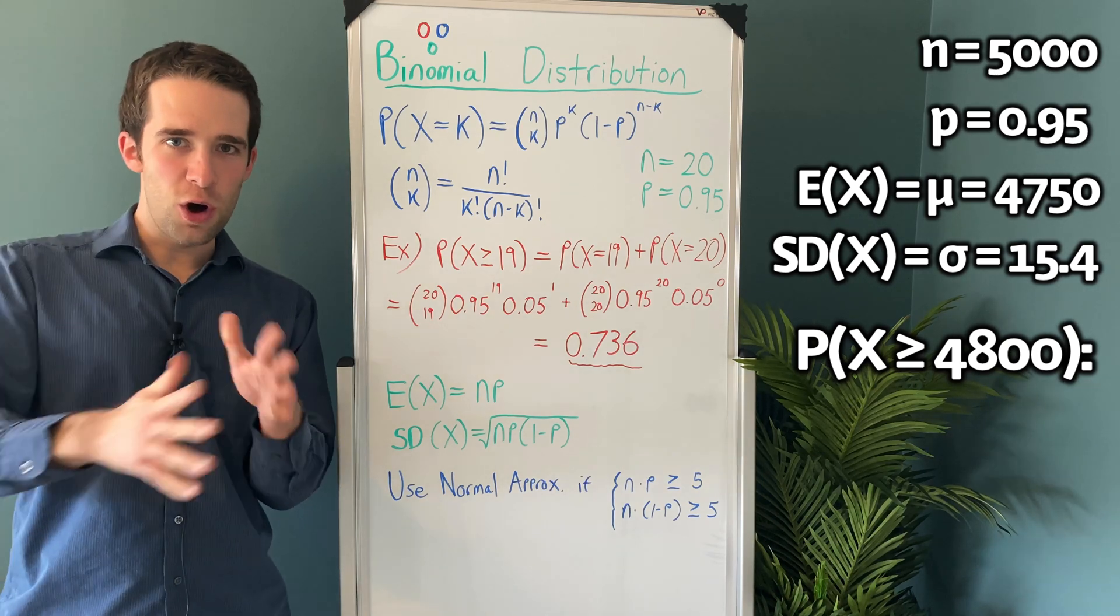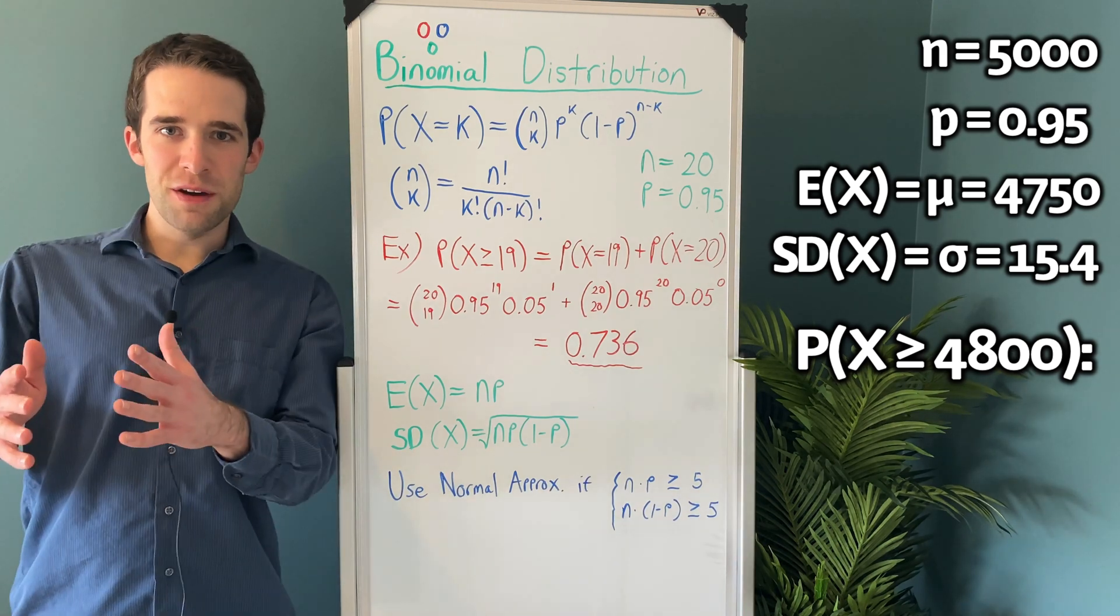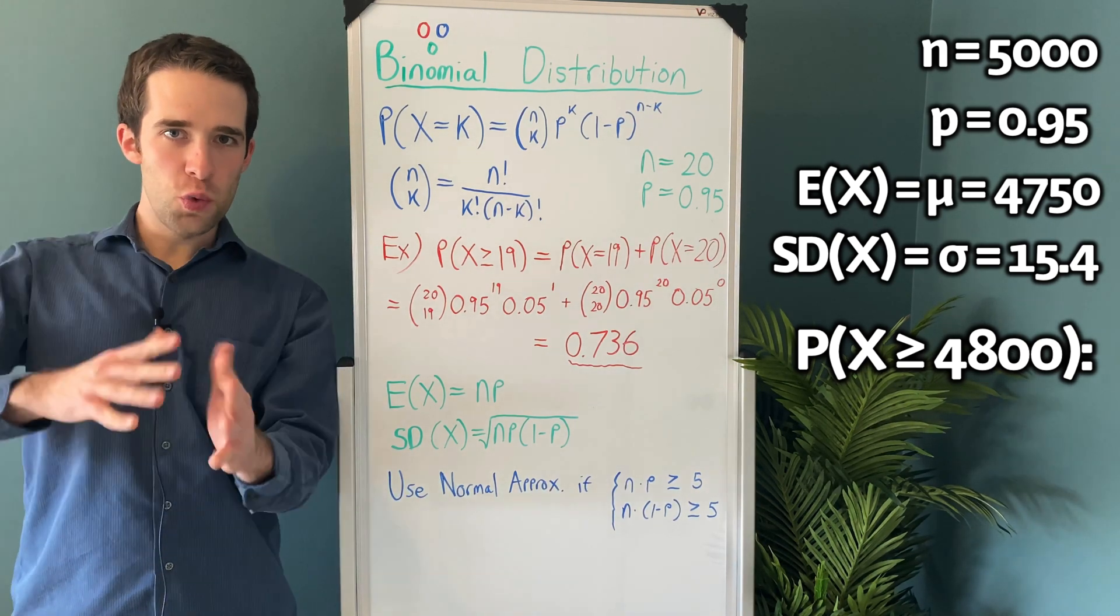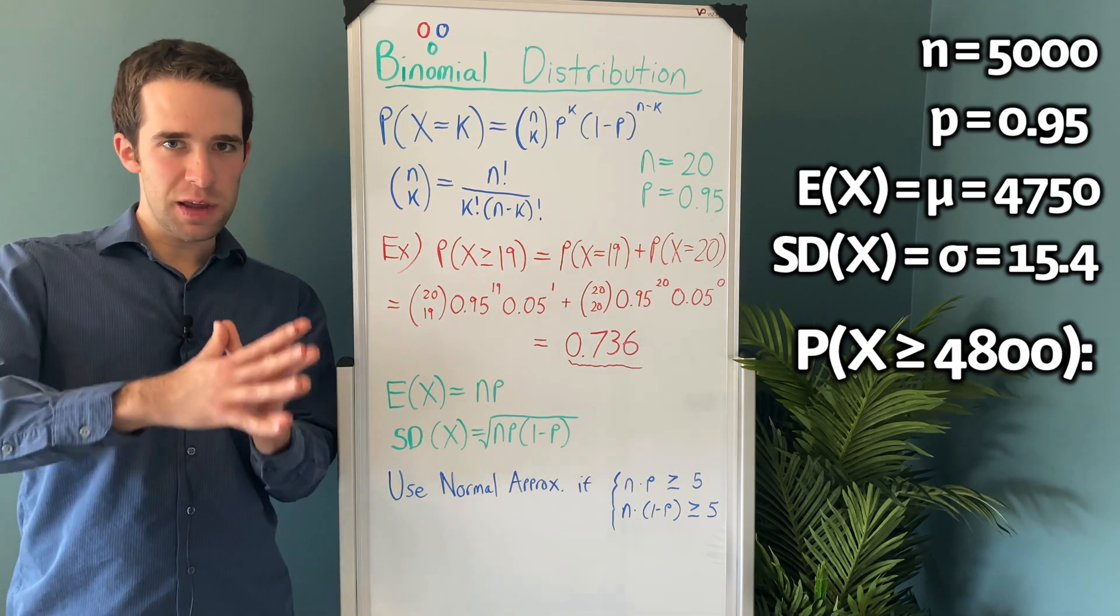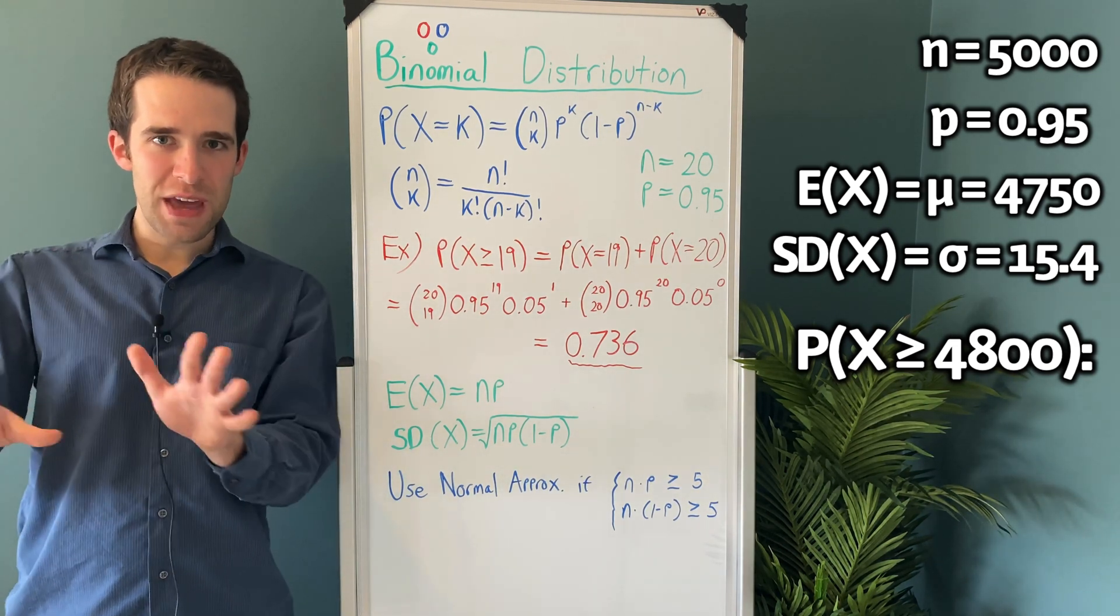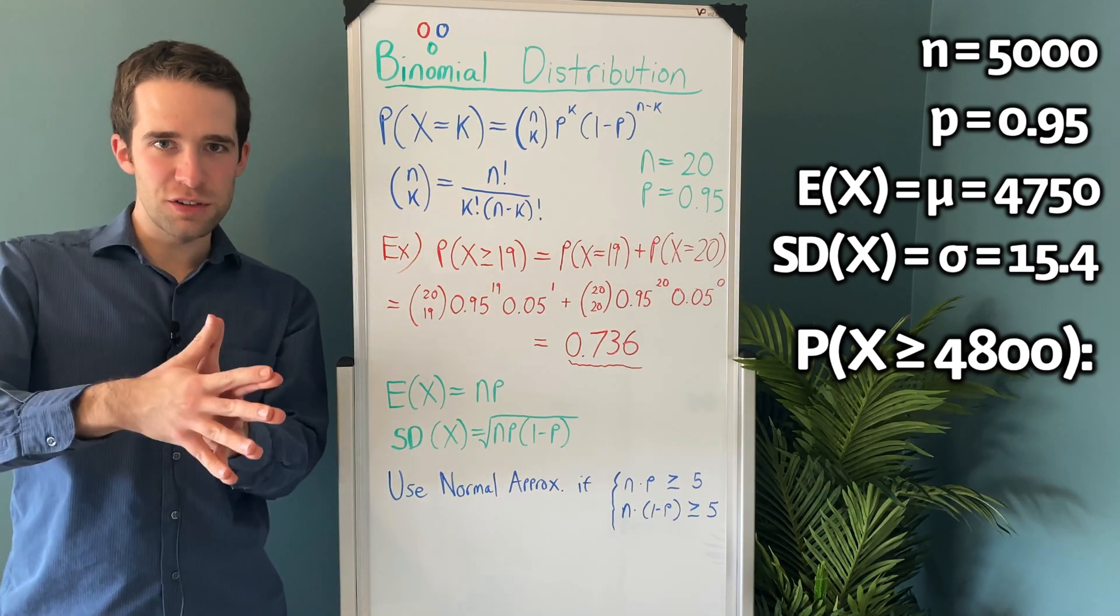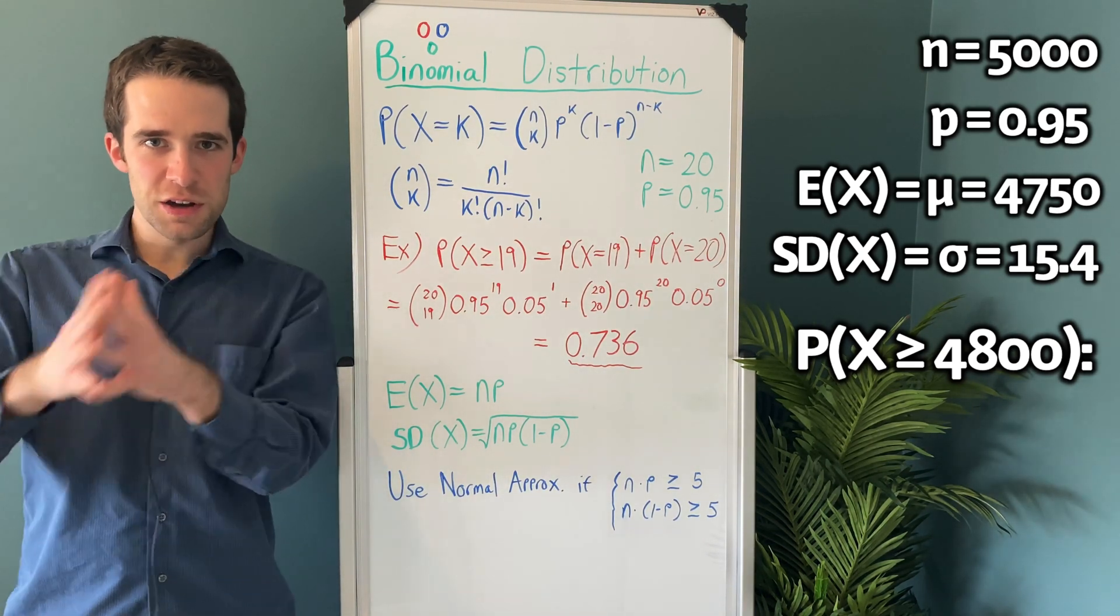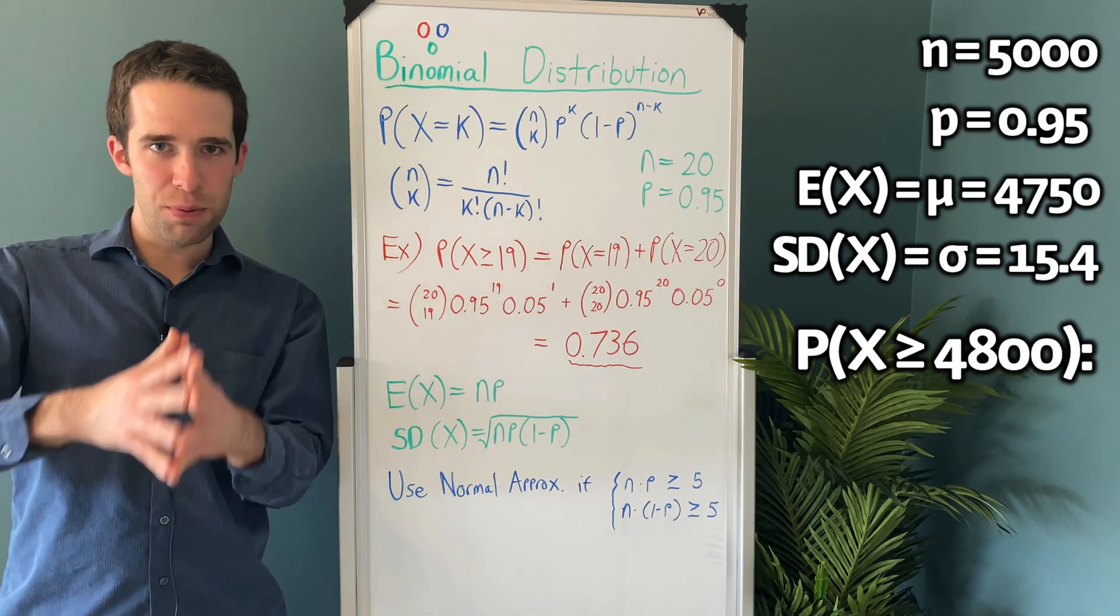At this point, all this is is just a normal distribution probability calculation. If you've seen my video on the normal distribution, you already know how to do these probability calculations. And we already calculated mu and sigma. All we have to do is calculate a z-score now. So z equals 4800 minus 4750 divided by 15.4. We get a z-score of 3.25.